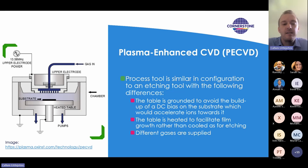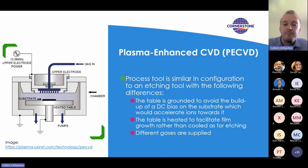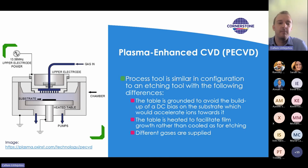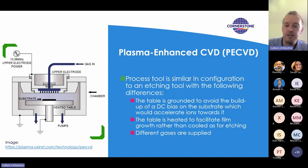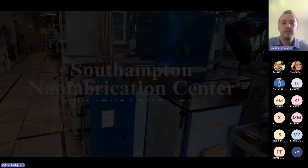We bias it so it just naturally lets the film grow. In the case of etching, we'd usually cool the table to prevent the resist burning, but with a deposition process we'd heat the table to encourage the film to grow.